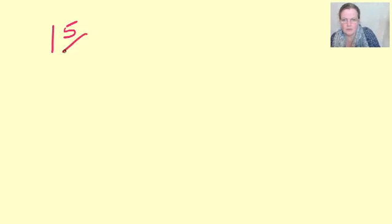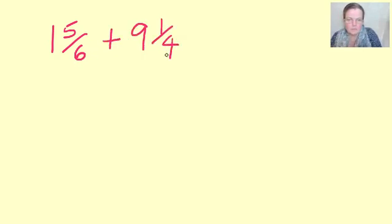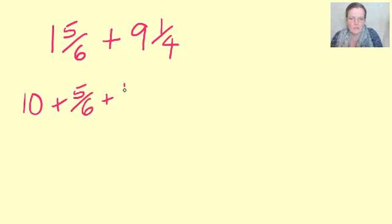Let's clear ourselves and we'll do number three. So we've got one and five sixths. Ooh, the cat's up to no good. Plus nine and a quarter. Let's do the whole pizzas first. Nine plus one is ten.